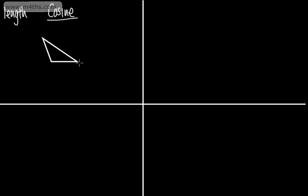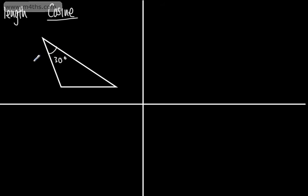To start with, I'm going to look at finding a missing length in a non-right-angle triangle. I'm going to start with the cosine rule. I'll draw up a triangle and put some values on here — let's say this angle is 30 degrees, this length is 10 meters, and this length is 13.1 meters. I'm going to call my unknown side x. If we have an enclosed angle, we use the cosine rule to find the missing length. The 30-degree angle is between a known side of 10 meters and a known side of 13.1 meters, so we have an enclosed angle.